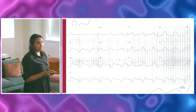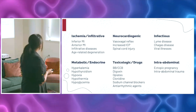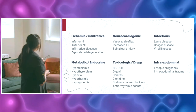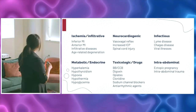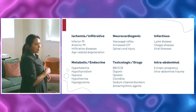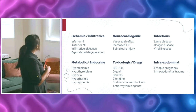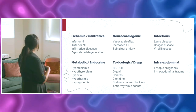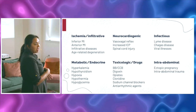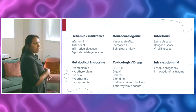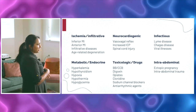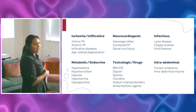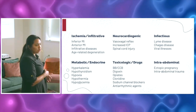Bradycardia in general has a very long differential. A couple to highlight from history and physical: things like increased ICP, spinal cord injuries, and neurogenic shock should be apparent. Also think about intra-abdominal hemorrhage causing paradoxical bradycardia — especially in young patients not usually unstable from bradycardia. Think about a young female writhing in pain: consider ectopic pregnancy or intra-abdominal hemorrhage affecting the heart rate.